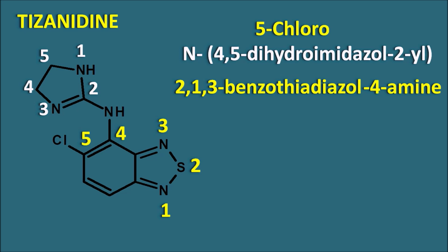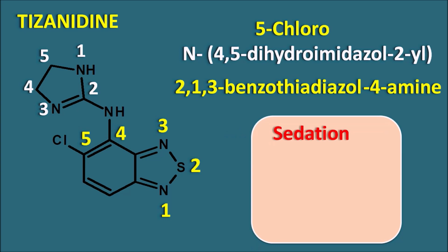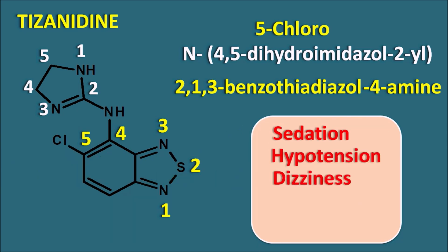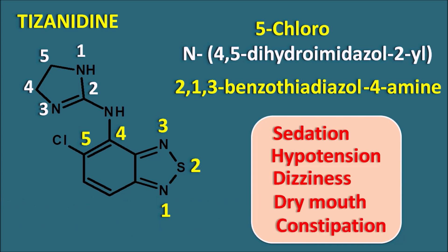Since tizanidine acts centrally, it produces central depressant effects like sedation, hypotension, and dizziness, as well as other side effects like dry mouth and constipation. It is an alpha-2 agonist related to clonidine — clonidine is a centrally acting antihypertensive, while tizanidine is a centrally acting muscle relaxant. Tizanidine causes hypotension under normal conditions, and if stopped suddenly it can produce rebound hypertension and tachycardia, so it should not be stopped abruptly.